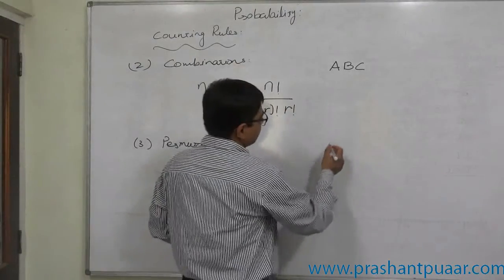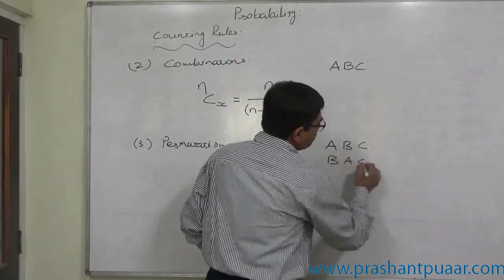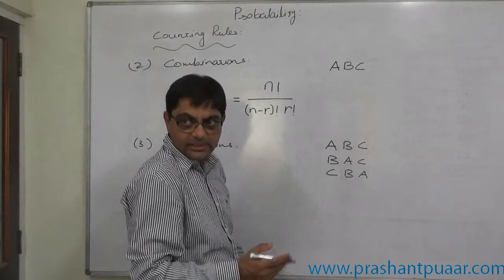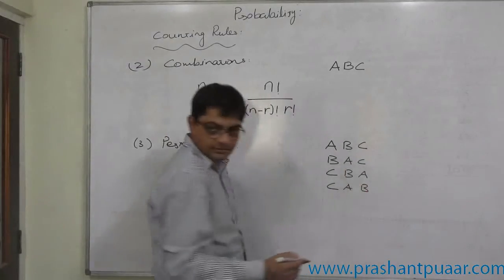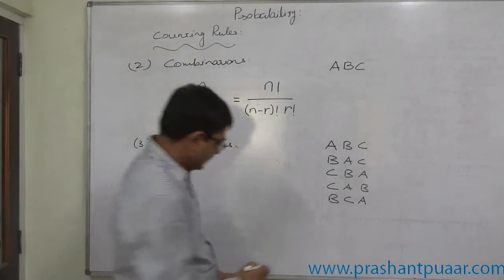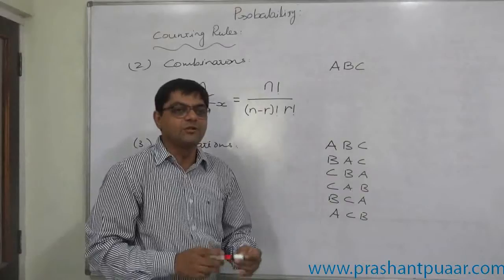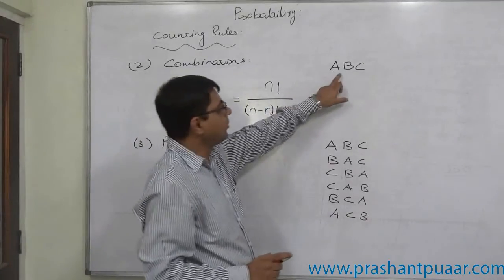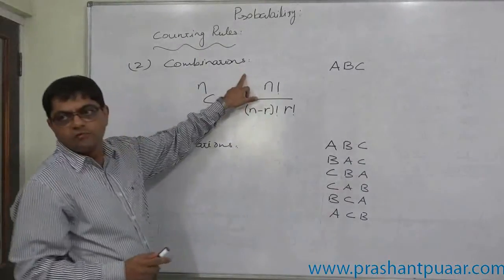In case of permutations, the order is important. That means b, a, c is actually a different result. Similarly, c, b, a is also a different result. Other arrangements like c, a, b and b, c, a and a, c, b — all these are actually different outcomes in case of permutations. So in cases where order is important, the rule of permutations is used; where order is not important, the rule of combinations is used.